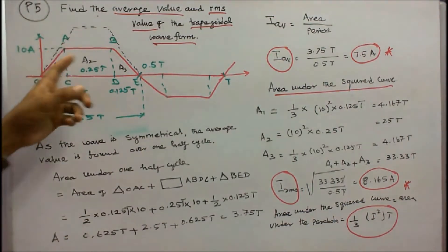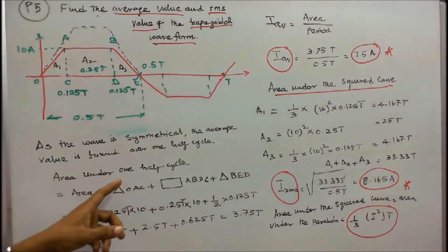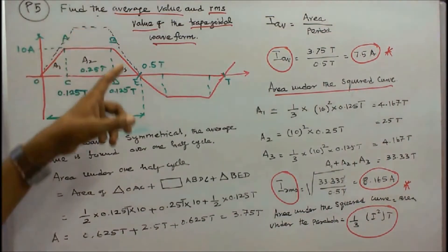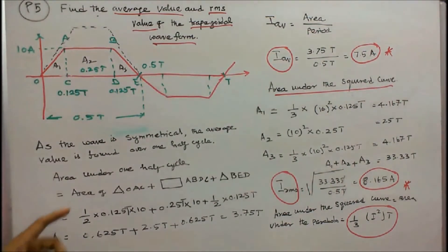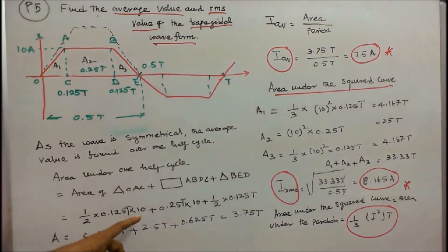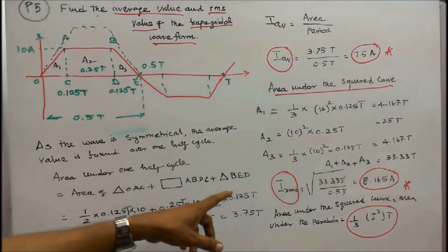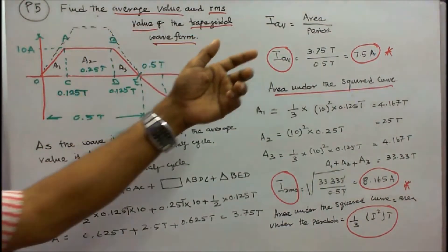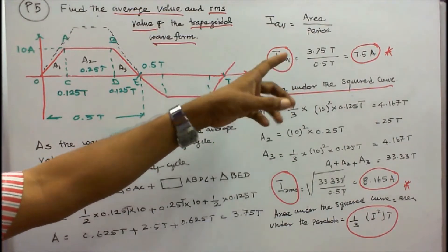The half cycle consists of two triangles and one rectangle, where A1 equals A3. Area under one half cycle equals the area of triangle OAC plus rectangle ABDC plus triangle BED: (1/2 times 0.125T times 10) plus (0.25T times 10) plus (1/2 times 0.125T times 10), giving an area of 3.75T. I average equals 3.75T divided by 0.5T, which equals 7.5 amps.